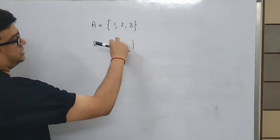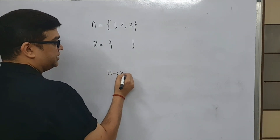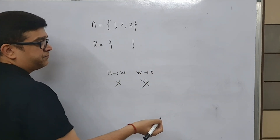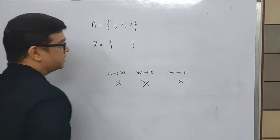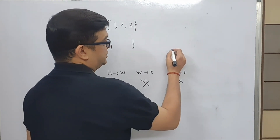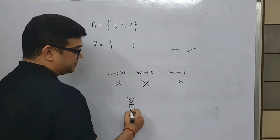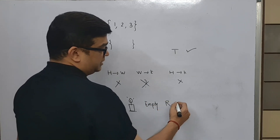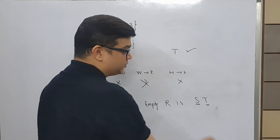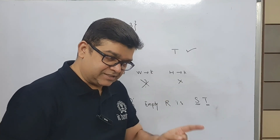Look at this example: the relation R is an empty set. I want to know whether it is transitive or not. Whether you have husband related to wife? No. So there is no question of wife having a kid, and there is no question of husband being related to kid. If husband is not related to wife, wife doesn't have a kid — there is no question at all. So this relation is transitive. Remember: every empty relation is symmetric as well as transitive — empty is ST.